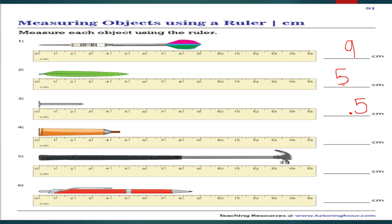Now let us find the length of a nail. Place the left end of the nail at the 0 mark on the ruler and see where the other end falls to find the length of the nail.